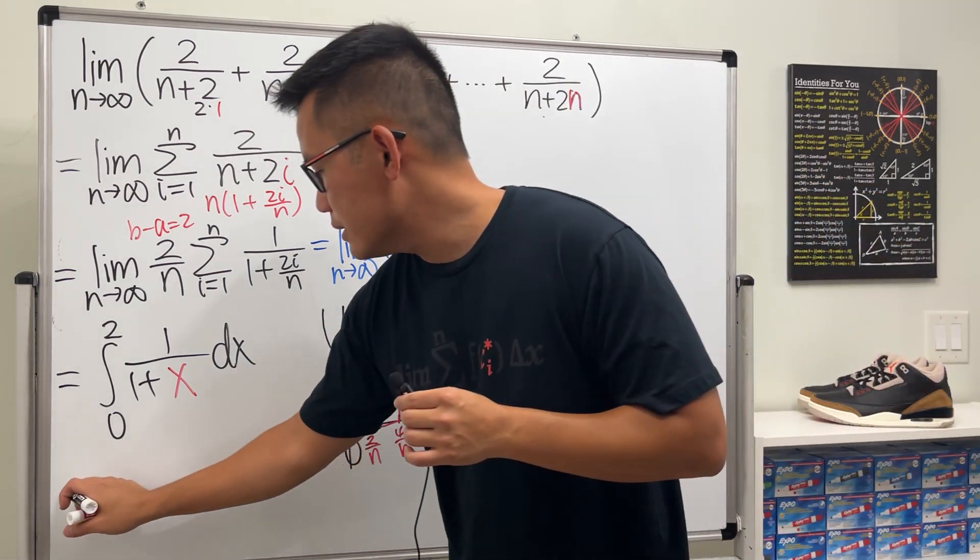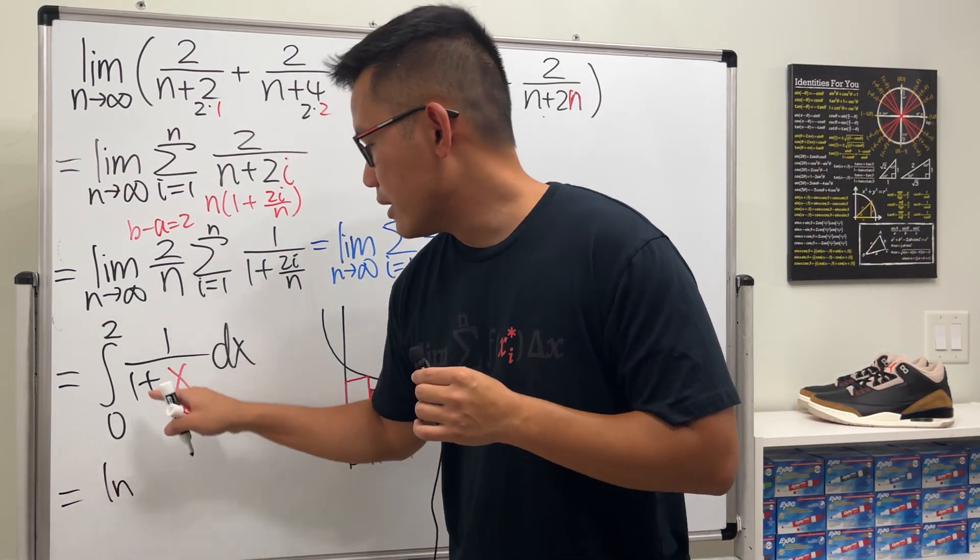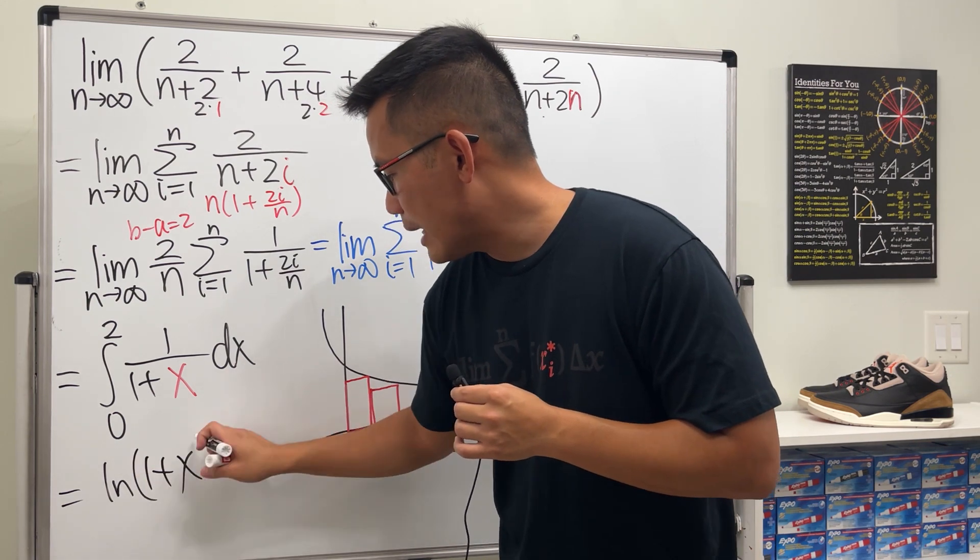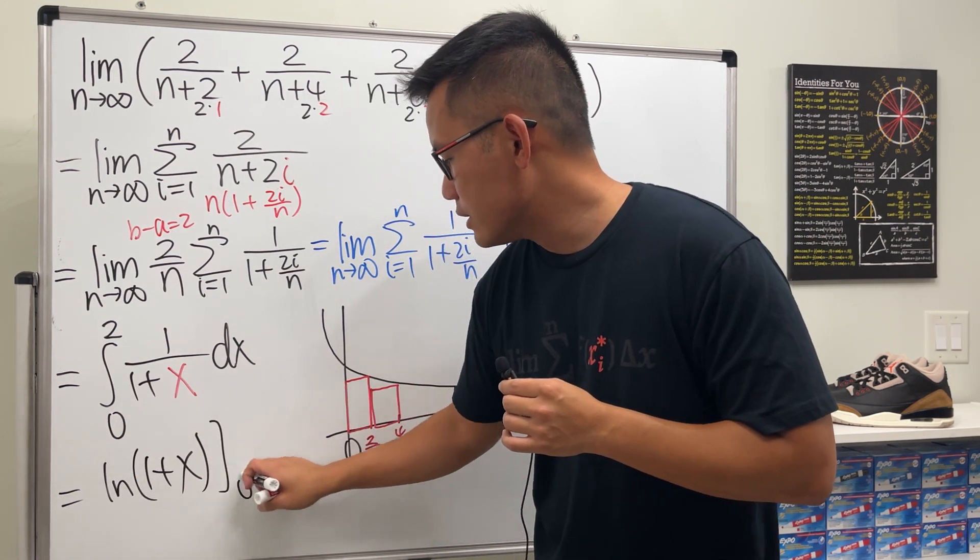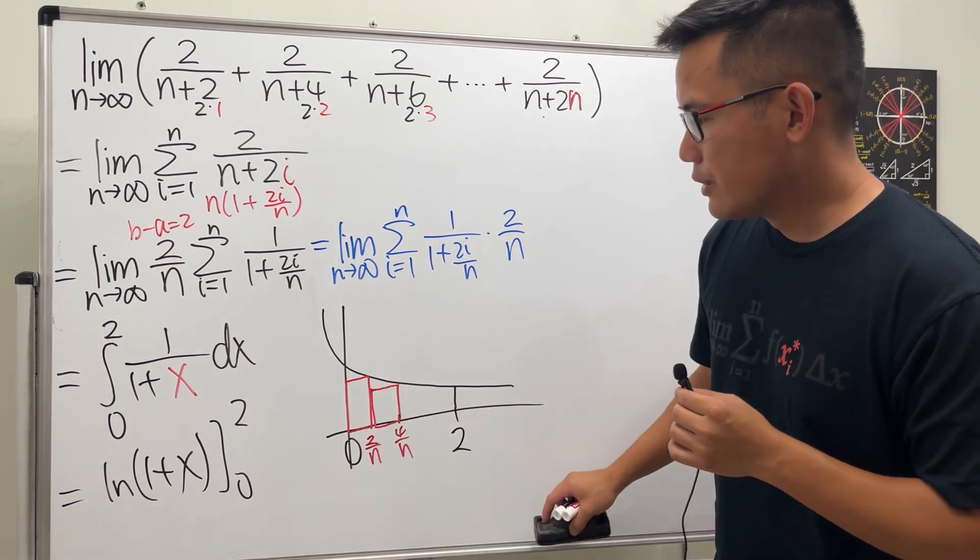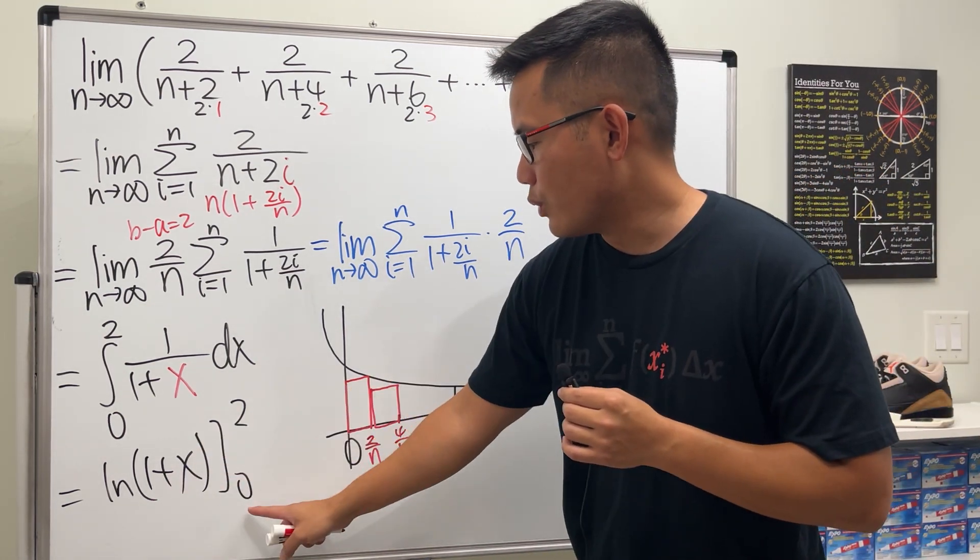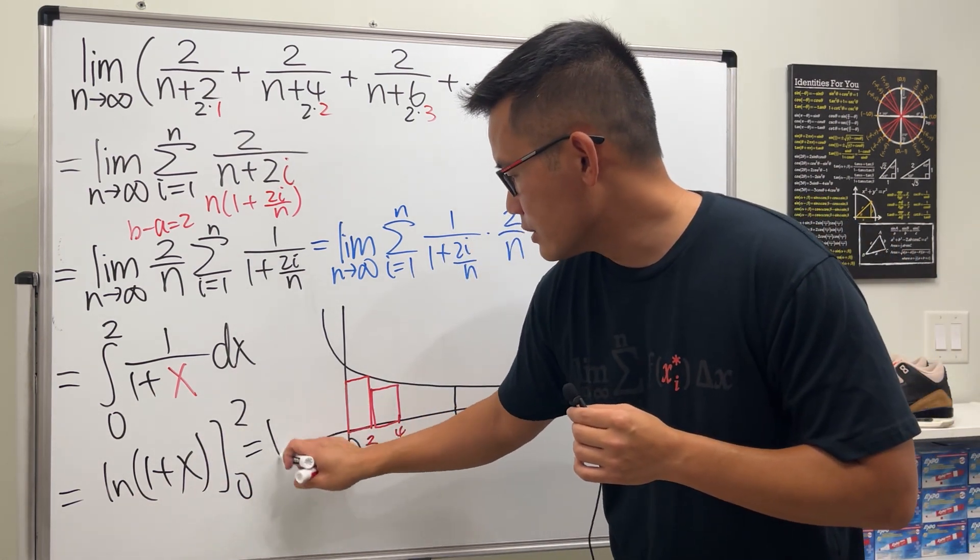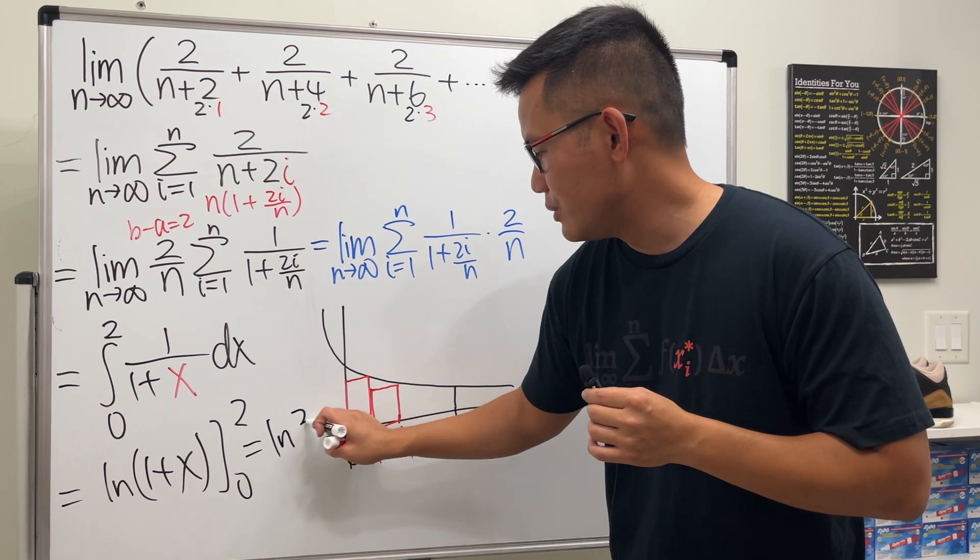So lastly, we just have to compute this. And it's not bad at all because the integral of this is just ln of 1 plus x. And we don't need absolute value because we're just going from 0 to 2. And then, of course, do the usual business. We're just going to plug in, plug in. But when we plug in 0, ln 1 is equal to 0. So the final answer is just ln of 1 plus 2, which is ln 3.